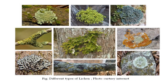Crustose or leprose lichens are the simplest type, where the fungal mycelium envelops either single or small clusters of algal cells. They are very much like a stain type — not fluffy.